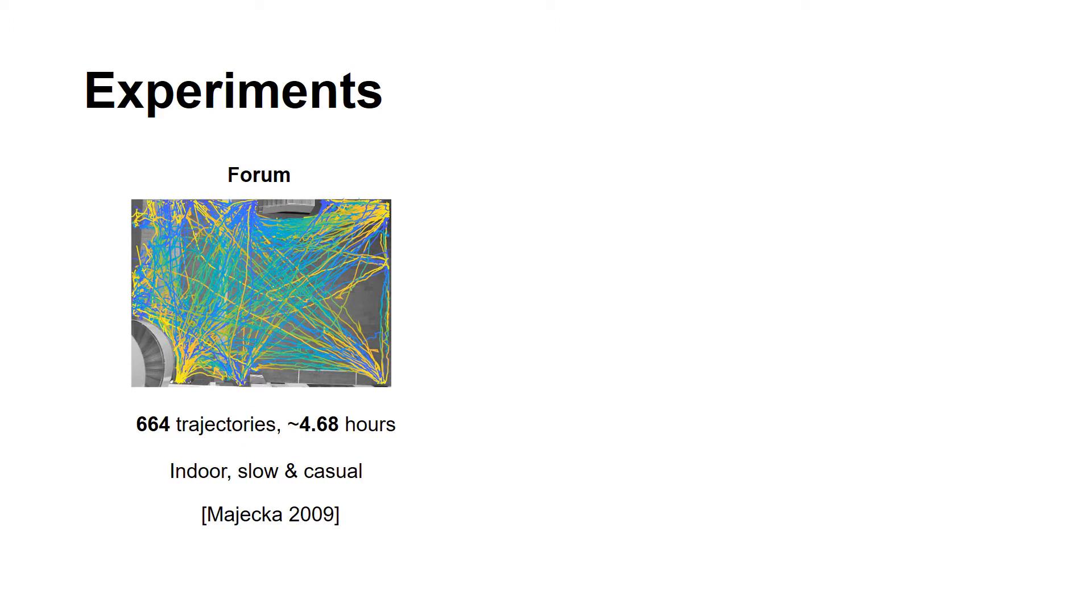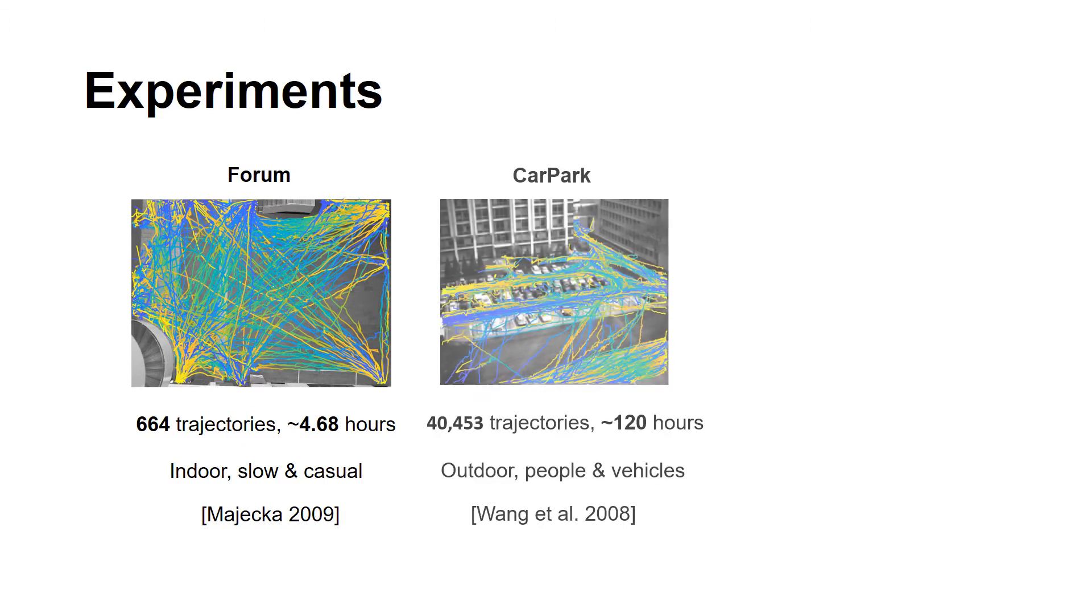This is an indoor environment where pedestrians are in general slow and casual. The second is a car park dataset, which contains more than 40,000 trajectories over 5 days. This is an outdoor environment where both pedestrians and vehicles are tracked.